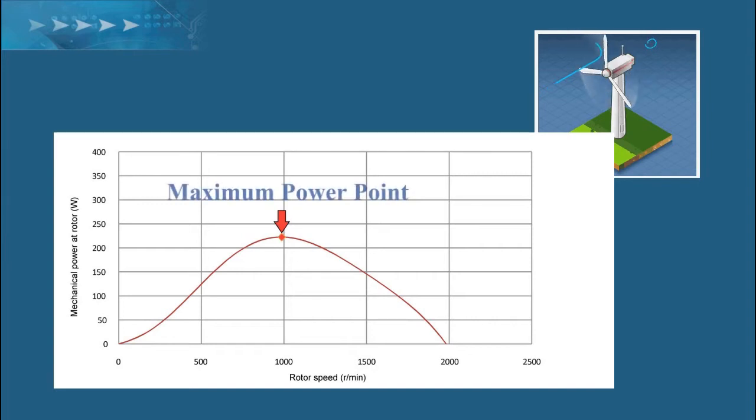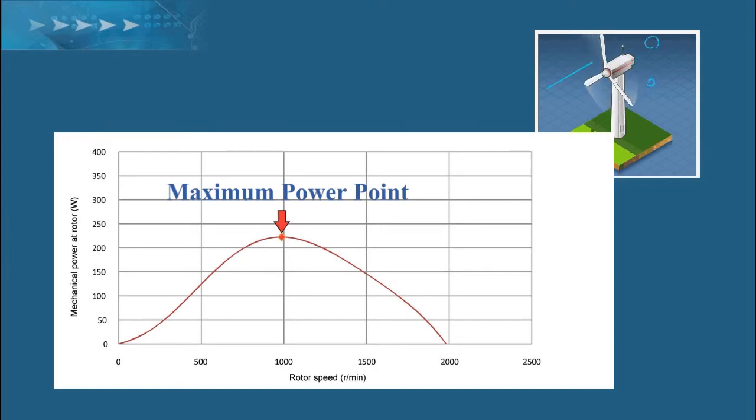This point is called the maximum power point. It is the optimal blade speed that I would like to have for that particular wind speed.